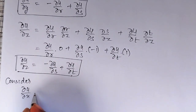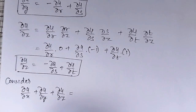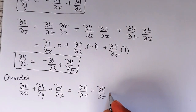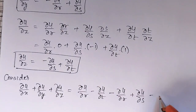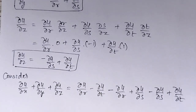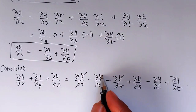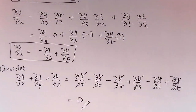Now adding all three: ∂u/∂x + ∂u/∂y + ∂u/∂z = (∂u/∂r − ∂u/∂t) + (−∂u/∂r + ∂u/∂s) + (−∂u/∂s + ∂u/∂t). You can observe that ∂u/∂r and −∂u/∂r cancel, −∂u/∂t and +∂u/∂t cancel, and +∂u/∂s and −∂u/∂s cancel. Therefore the result is equal to zero, which is what we had to prove.